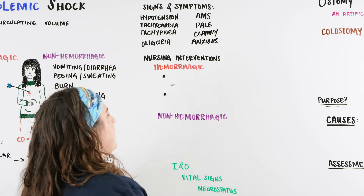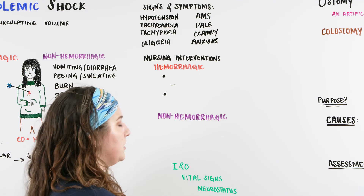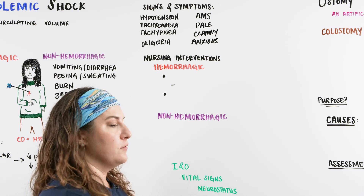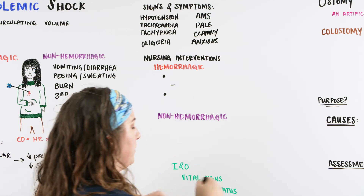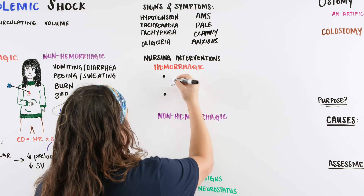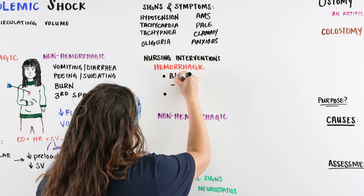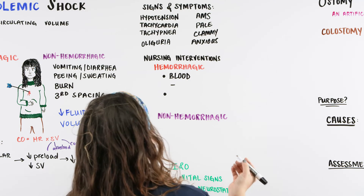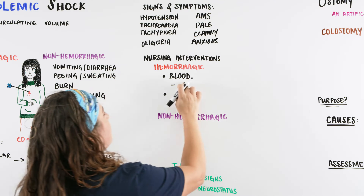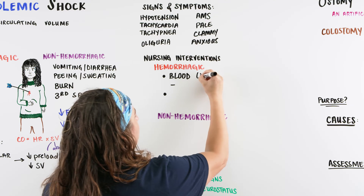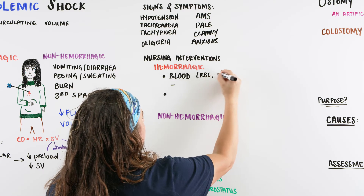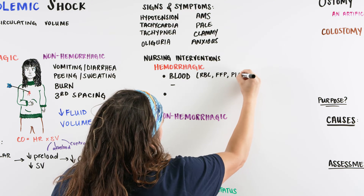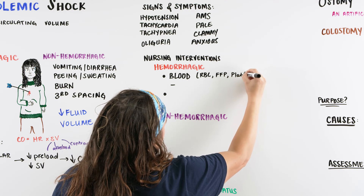When we are looking at a patient that is indeed having a hemorrhagic type of shock, we want to start thinking about what we need to do to get those volumes back up. So if they lost blood, we're going to be giving this patient blood — we're going to transfuse blood. We want to think about our RBCs, our red blood cells. They might get fresh frozen plasma and they might even need some platelets.